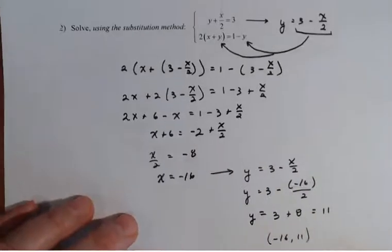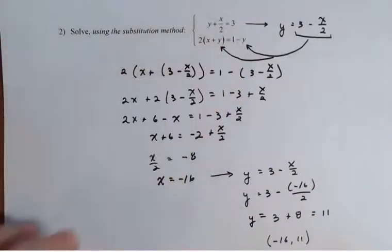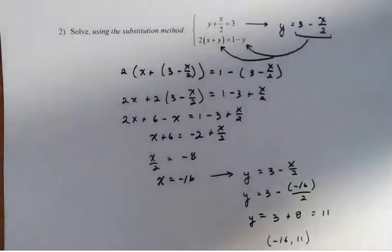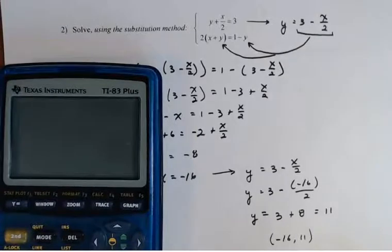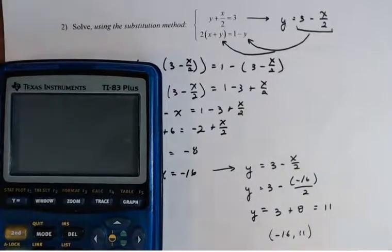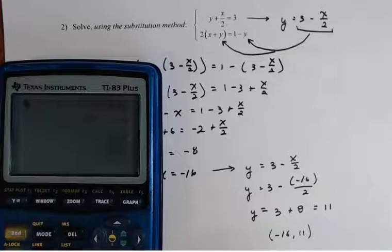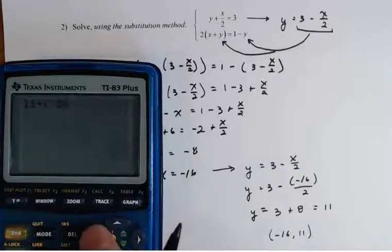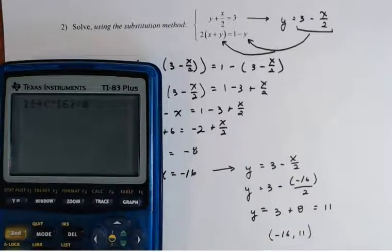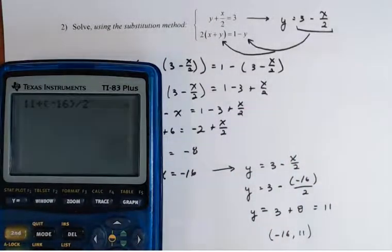You can always check it by just plugging it back into your calculator. So let's try that. It's always great to check. So if I have x equal to negative 16 and y is 11, I'll plug it into the first one. So 11 plus negative 16 divided by two should equal three, and it does.